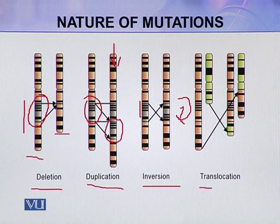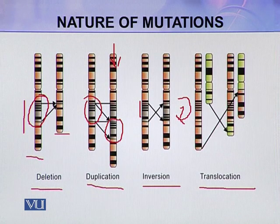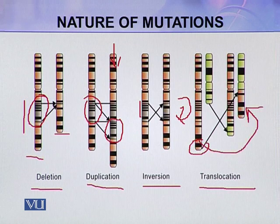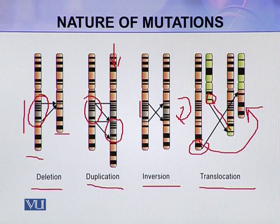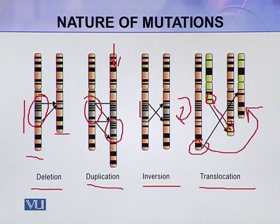Similarly, there are translocations. In the case of translocations, a piece of chromosome may be deleted and attached to another chromosome. For example, the green portion is deleted from one chromosome and attached to another. These deletions, duplications, inversions, and translocations are big mutations in contrast to point mutations.